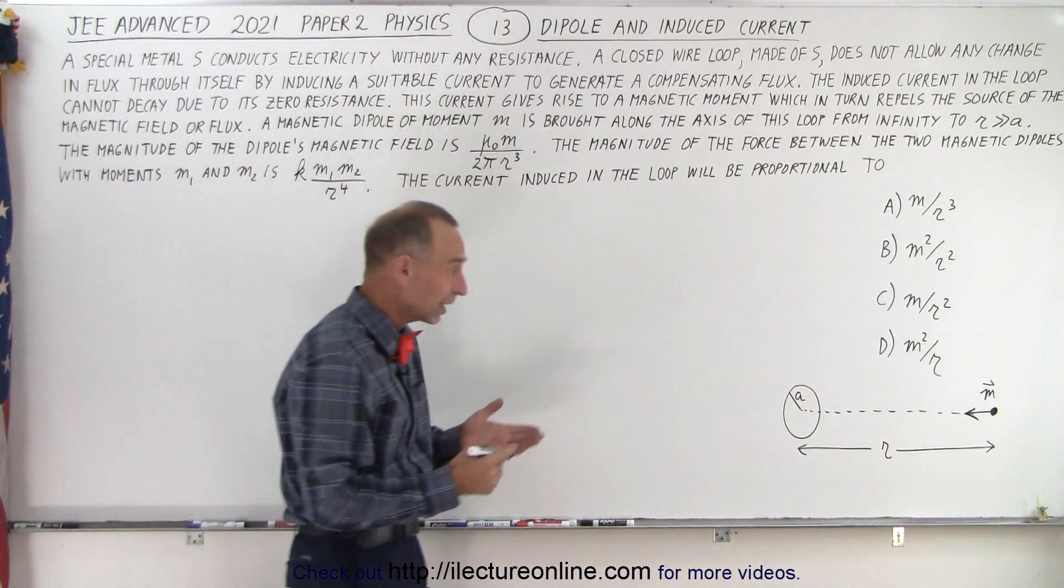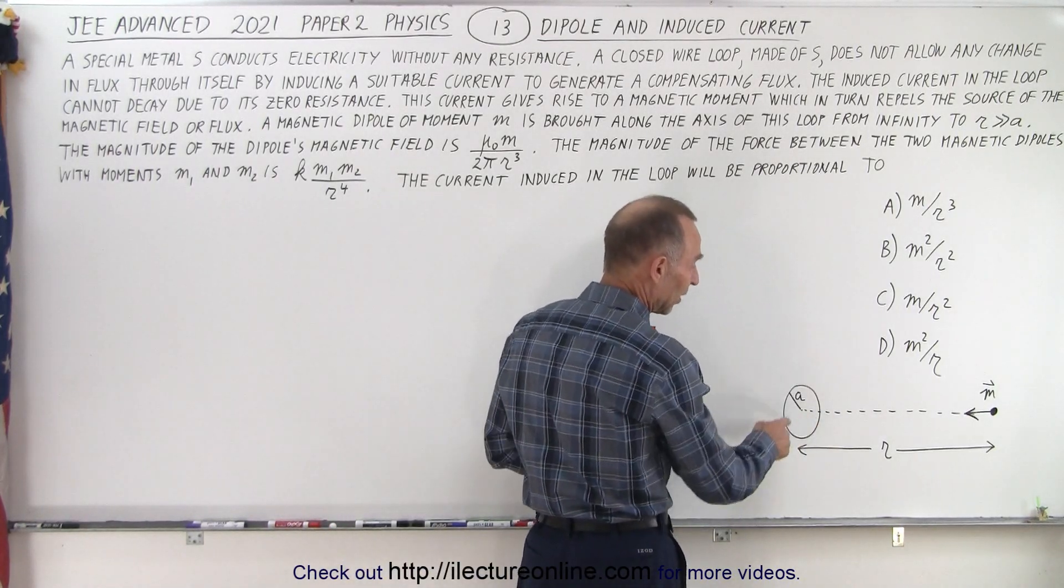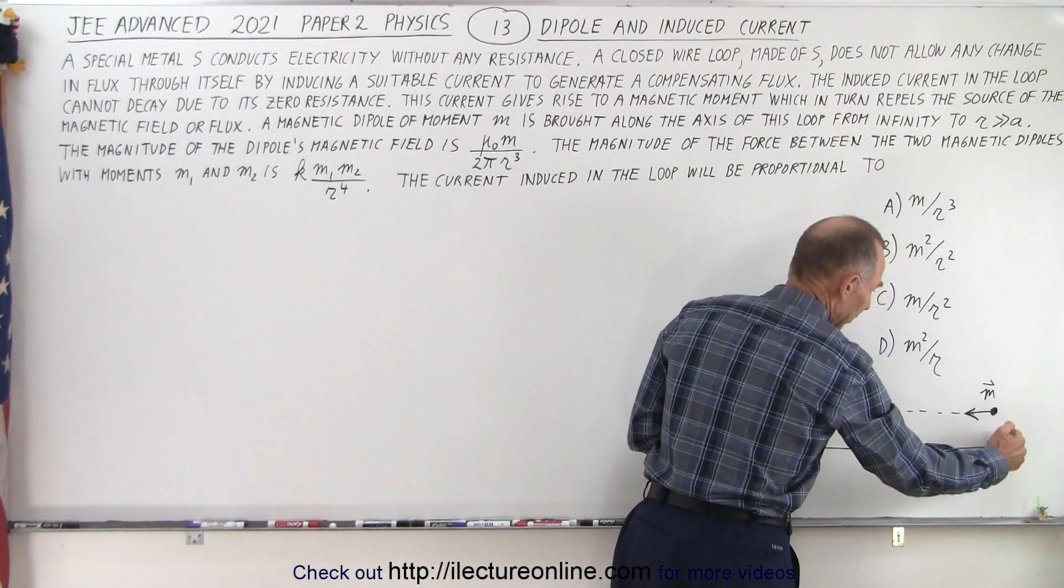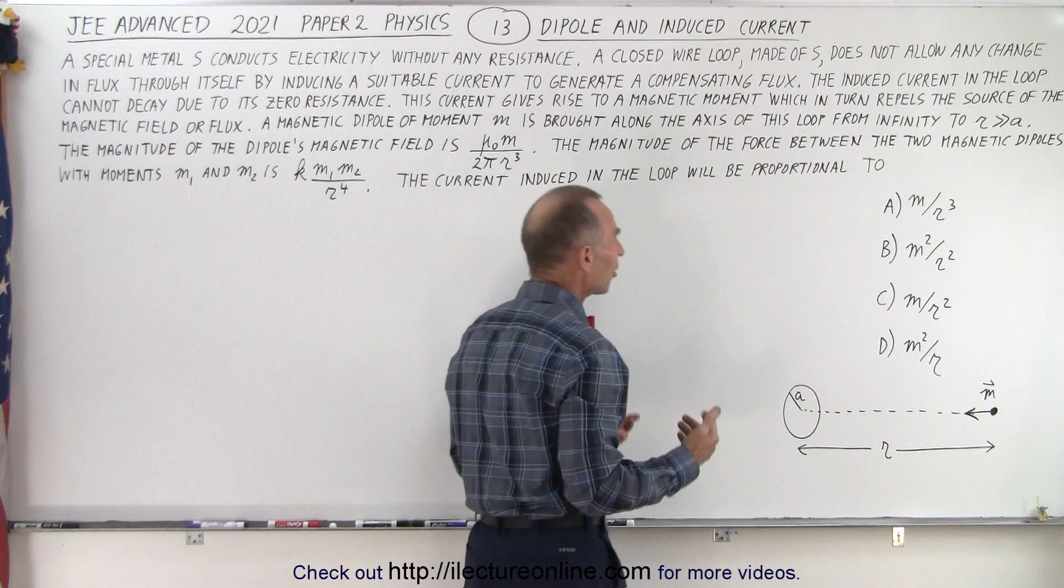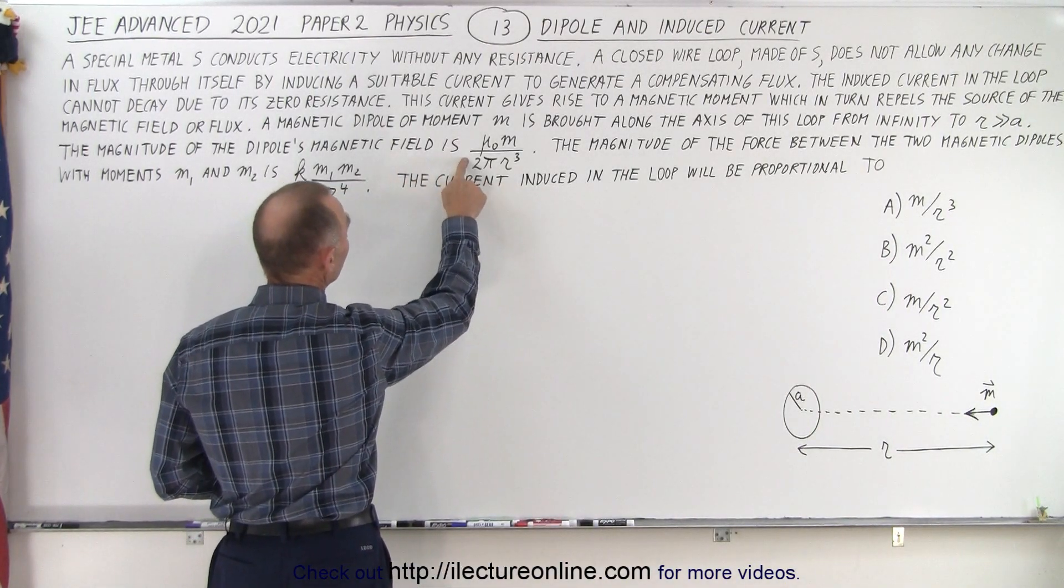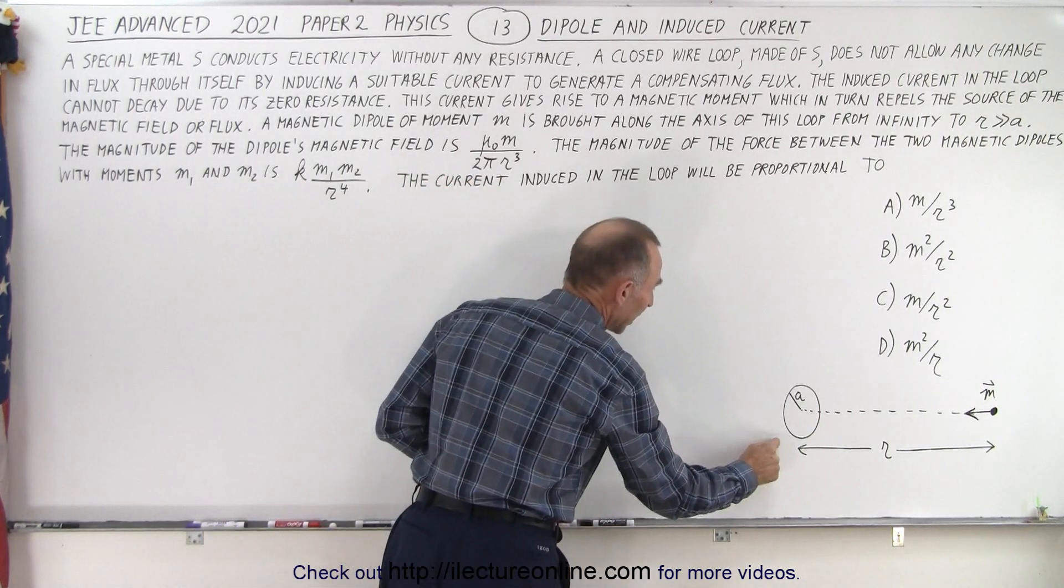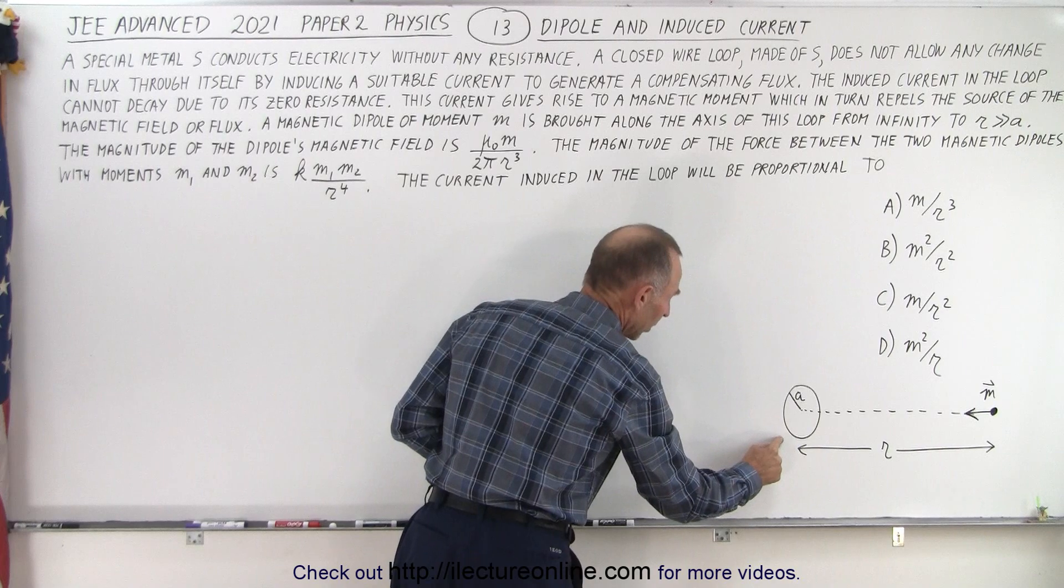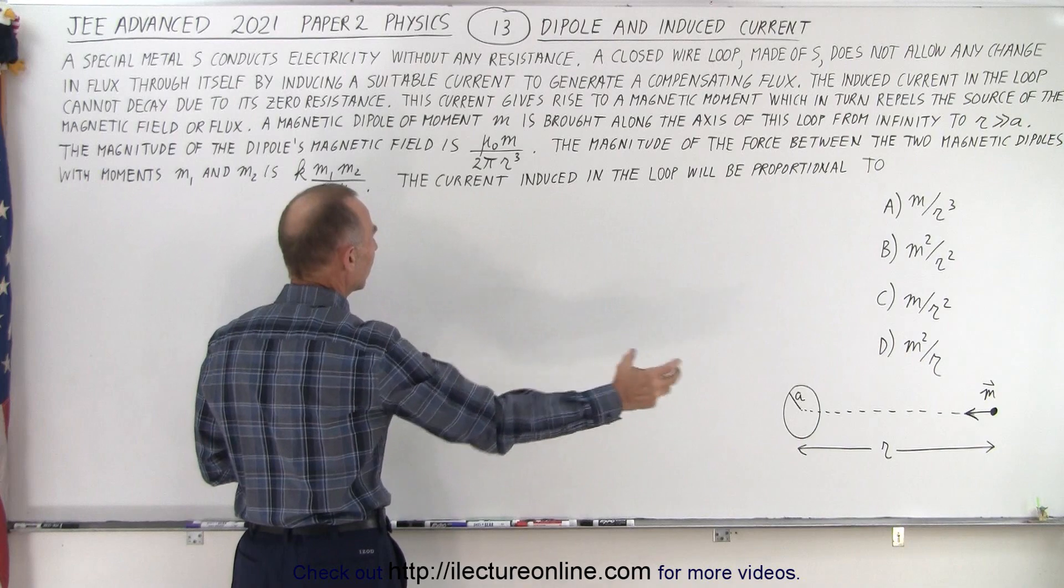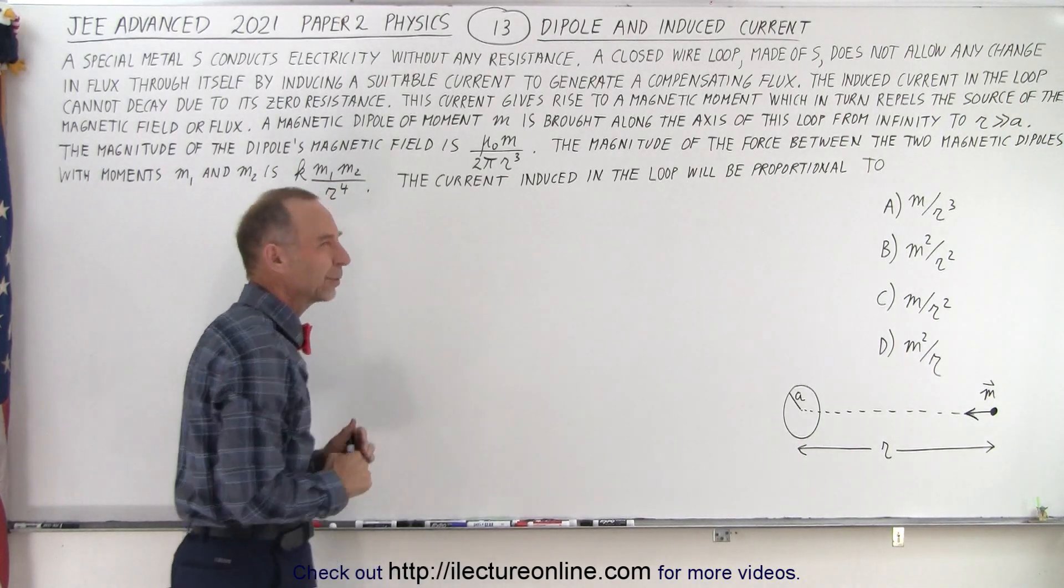They also were nice enough to give you a little bit of a diagram. So here's the loop made of metal S, which has no resistance, it has radius A, there's a dipole that's being brought from infinity down to a distance R, and from that we can conclude two things. That the dipole's magnetic field is equal to this, and that the force between the dipole moment caused by the small loop and the dipole moment of the one that we bring in close, M₁ and M₂, the force between them will be equal to that.